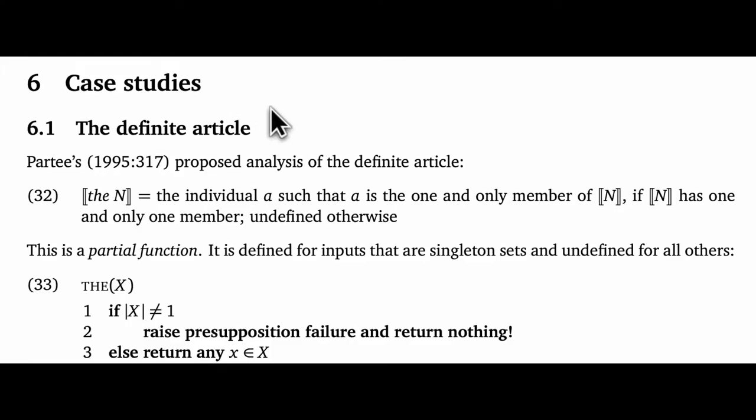To start, let's look at perhaps the best-studied presupposition trigger: the definite article. We've already seen some evidence that it's a presupposition trigger. I think our negation, interrogative, and conditional antecedent tests will all point to that designation. And indeed, this is clearly the analysis that Partee has in mind in our reading from the start of the course.